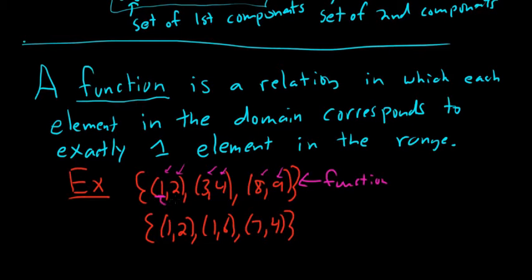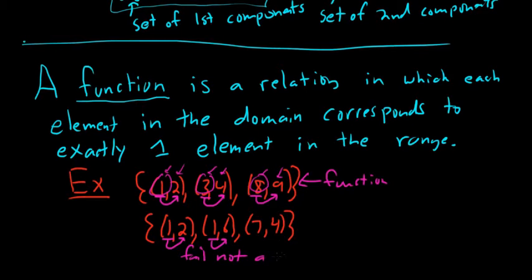For example, 1 goes to 2 and there's no other 1. So it doesn't go anywhere else. 3 goes to 4 and there's no other 3. So yes, it's a function. The second relation is not a function, because 1 goes to 2 but then 1 also goes to 6. You have the number 1 going to two different y values — it goes to 2 and it goes to 6. So if x repeats and goes to different y values, it's not a function.